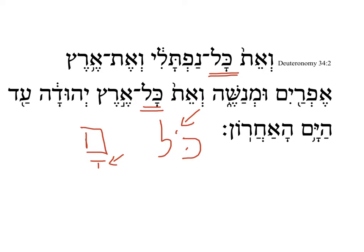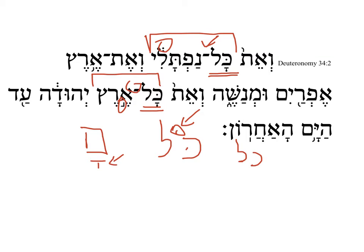In the case of this word kol, it's often connected — and here it's actually connected with a maqqef — to another word. When you have this connection to another word, the two words together function as one word as far as reading out loud goes. You'll notice that there's only one accent for each of these words, and the accent falls later in the second word towards the end. And so, when there's no accent, the holam is reduced to a qamets qaton.